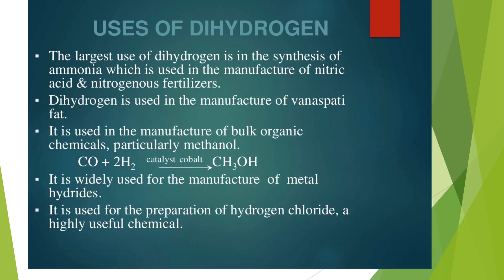Uses of hydrogen: The largest use of dihydrogen is in the synthesis of ammonia, which is used in the manufacture of nitric acid and nitrogenous fertilizers. Hydrogen is used in the manufacture of vanaspati fat. It is used in the formation of bulk organic compounds, particularly methanol. It is widely used for the manufacture of metal hydrides. It is used for preparation of hydrogen chloride, a highly useful chemical.